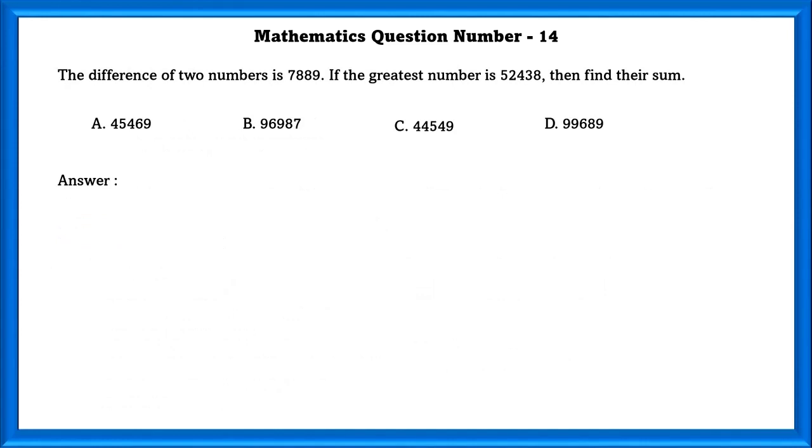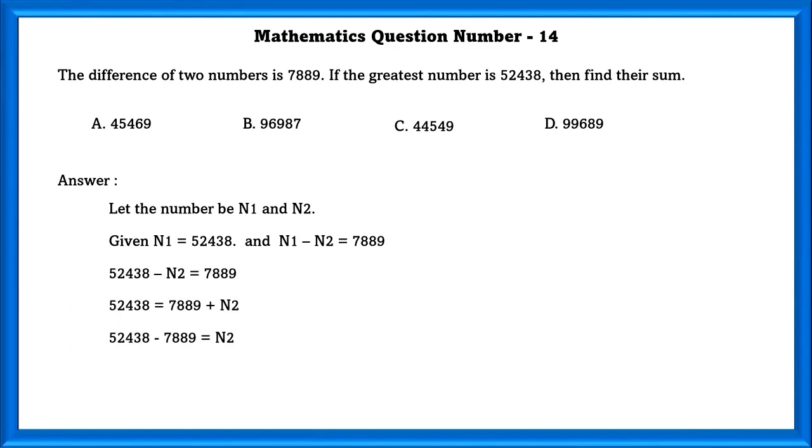Mathematics question number 14. The difference of two numbers is 7889. If the greatest number is 52438, then find their sum. Let the numbers be N1 and N2. Given N1 is equal to 52438. And N1 minus N2 is equal to 7889. Substituting the value of N1 in the equation, we will get 52438 minus N2, which is equal to 7889. Since N2 is a negative numeral here, we have to bring it to the opposite side of the equation to make it a positive numeral.